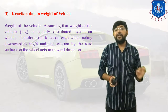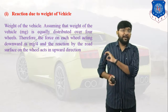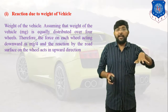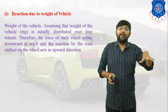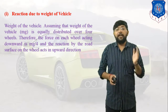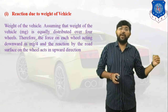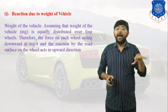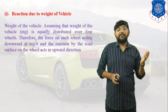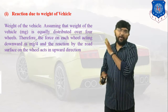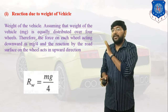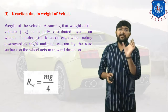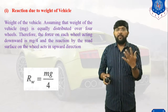First equation: reaction due to the weight of the vehicle. In this case we consider the load distributed equally in all four wheels. The weight of the vehicle is assumed equally distributed over four wheels. Therefore, the force on each wheel acting downward is mg/4, and the reaction by the road surface on each wheel acts upward. So, the reaction of each wheel is mg/4.